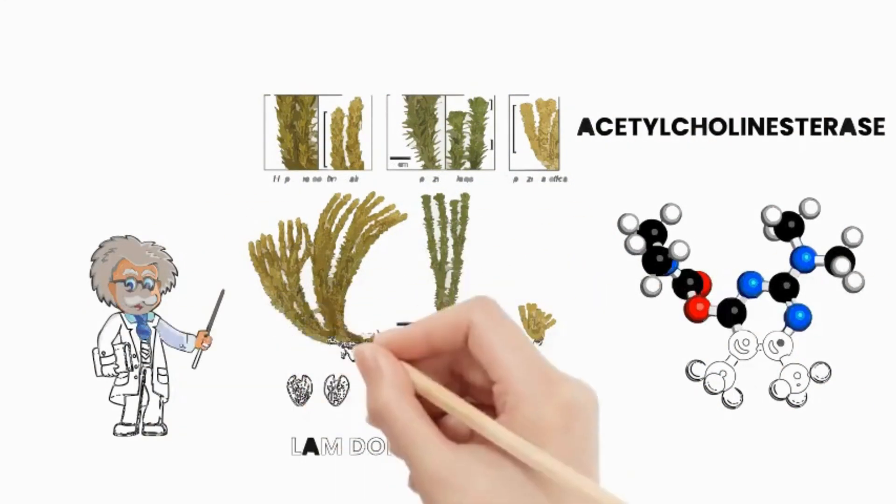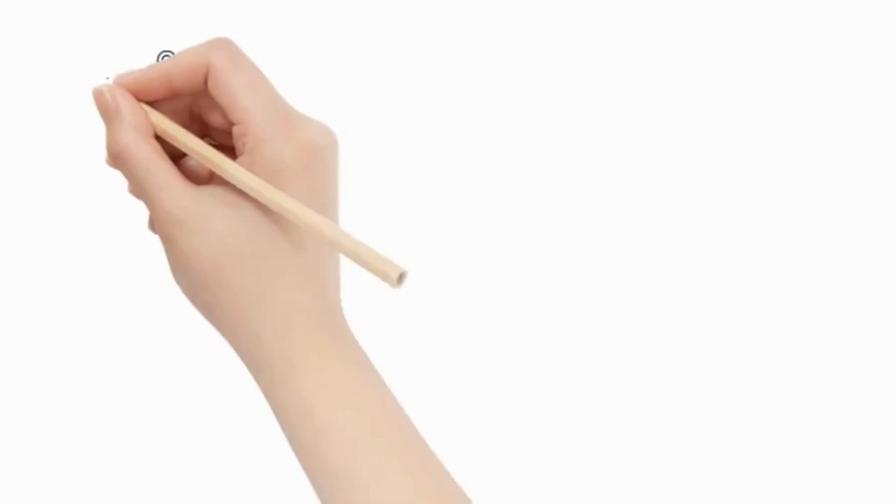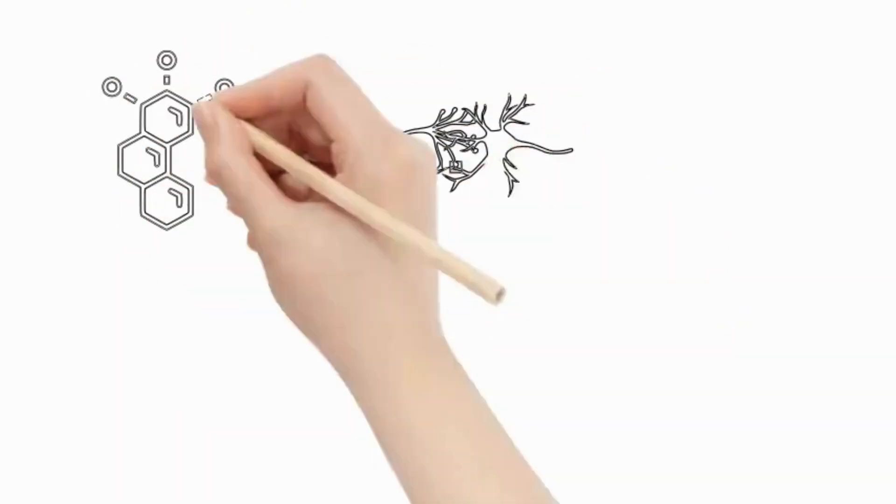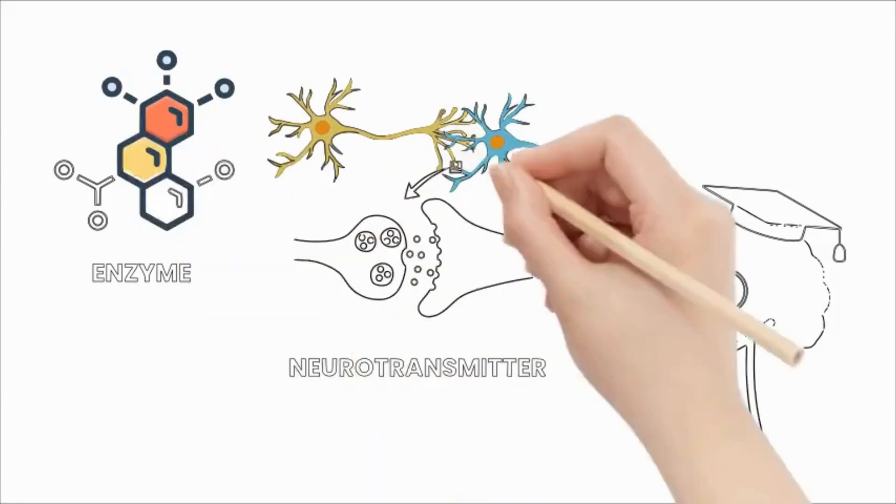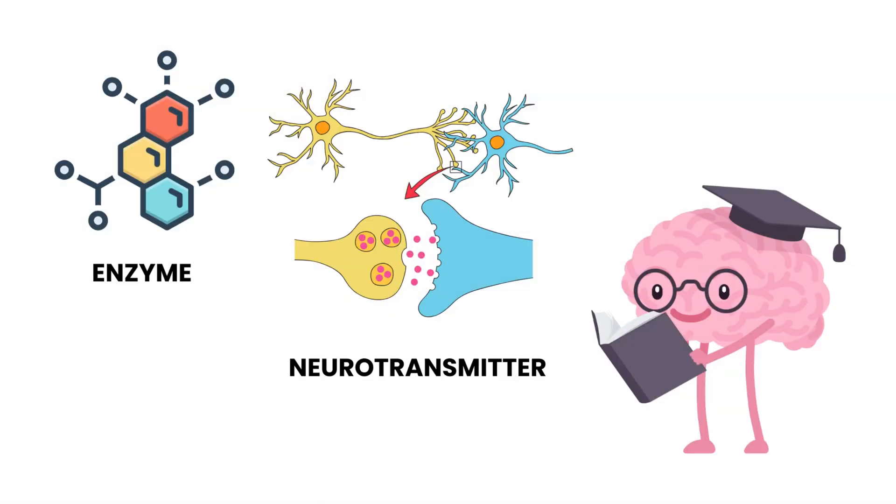This herb contains the active ingredient huperzine, which inhibits the production of acetylcholinesterase, an enzyme that leads to the degeneration of neurotransmitter pathways, thereby reinforcing memory processes and improving memory.